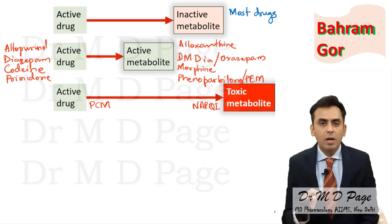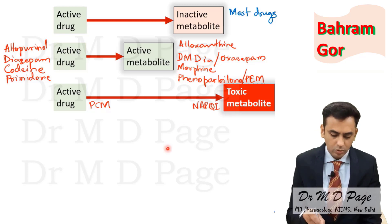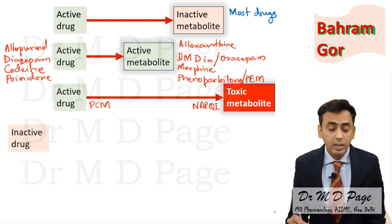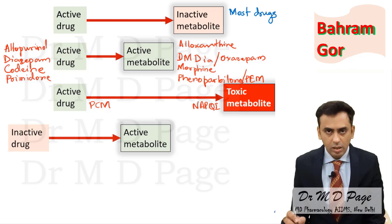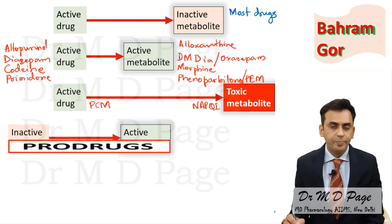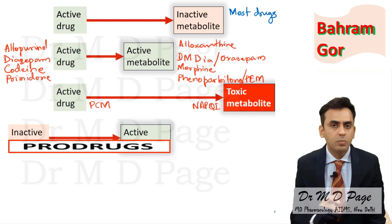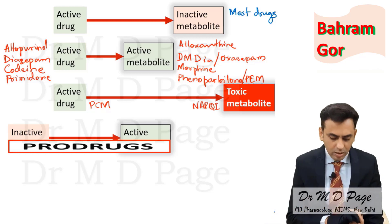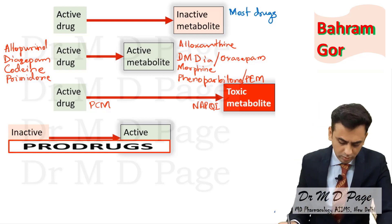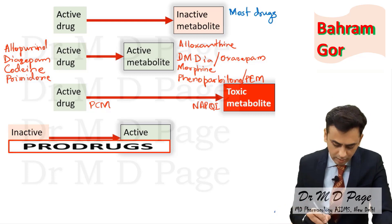One more case: the drug is inactive but it may get converted to an active metabolite after biotransformation in the liver. Such drugs are known as pro-drugs. We need pro-drugs because the drug is inactive and hence more stable; the drug is biotransformed inside the body so side effects are less, making it a better drug compared to active drugs.